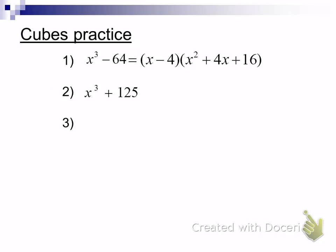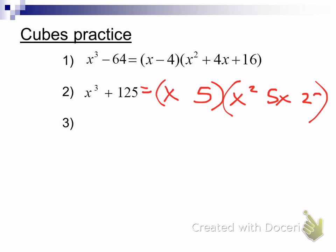What about x cubed plus 125? It has no GCF and no difference of squares, so we jump straight to cubes. Cubes always factor as a binomial times a trinomial. The cube root of x cubed is x, the cube root of 125 is 5. Then we square to get x squared, multiply them together to get 5x, and square 5 to get 25. Signs are same — so plus — opposite is minus, and then plus.